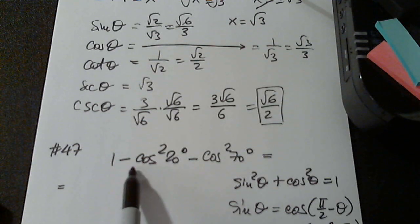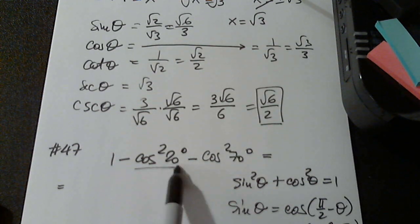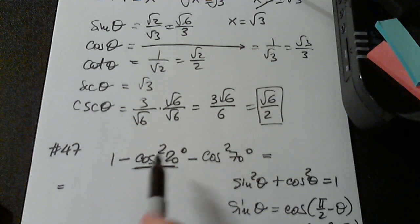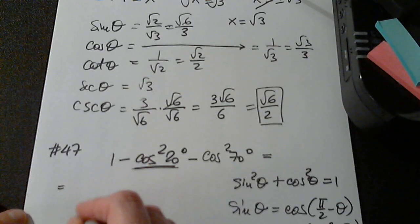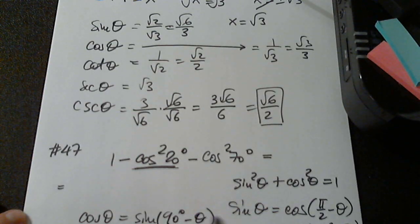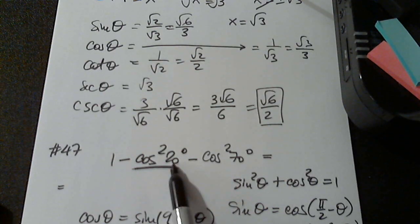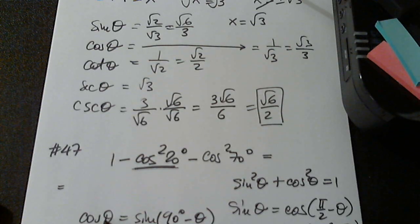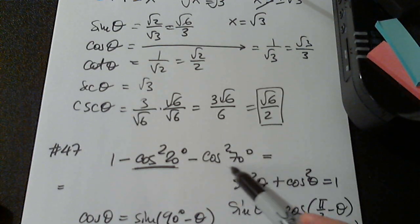So if I look at cosine squared 20 degrees, let me also write the other formula. So cosine theta equals sine of 90 degrees minus theta. So when I look at cosine 20, this is the same with sine of 90 minus 20. Why did this come up? Because I see here 70 degrees.